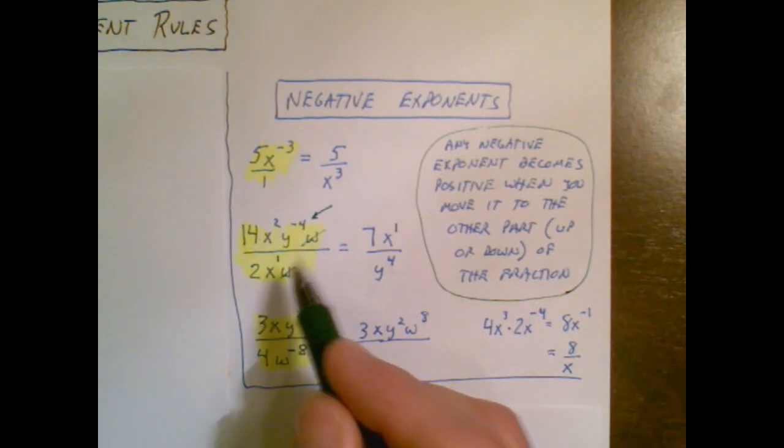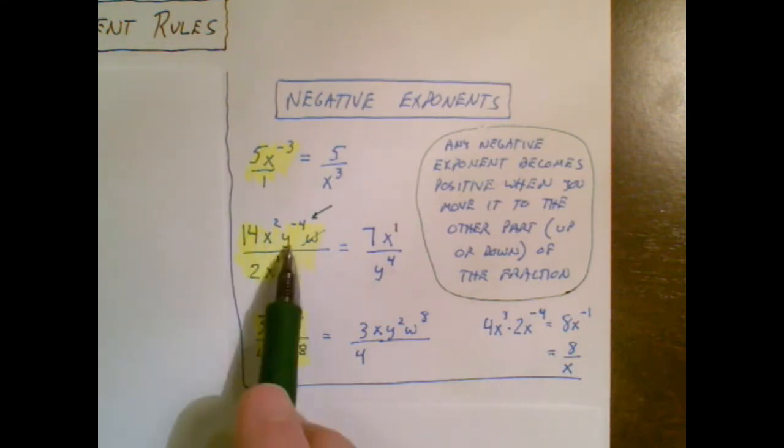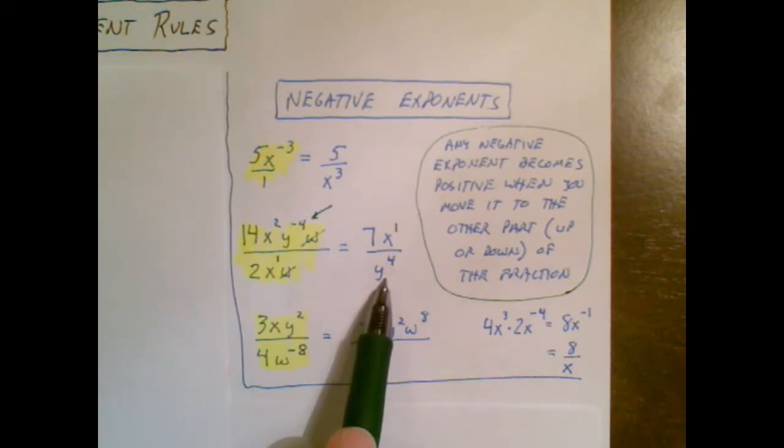One w in the top and one w in the bottom cancel perfectly. So really we've taken care of everything but we've purposely ignored the y to the negative 4 but then the rule is if I have a negative exponent I move it to the other part. It was in the numerator so I move it to the denominator and call it positive.